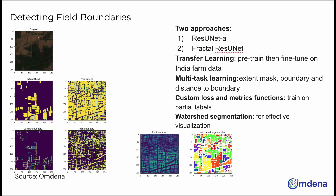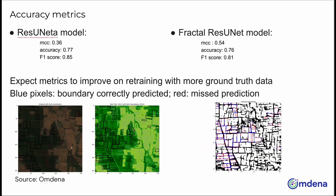Finally, watershed segmentation was applied as post-processing to obtain the individual fields predicted by the models. The fractal ResNet model had a better Matthews correlation coefficient score, while accuracy and F1 were similar between the two. The results achieved by both models are impressive given the small and irregular Indian farms, the limited Indian farm dataset, and the relatively low resolution images used. We expect these values to improve significantly as our partner obtains more ground truth data and retrains the models.